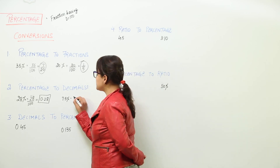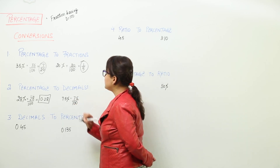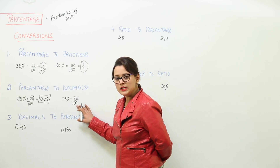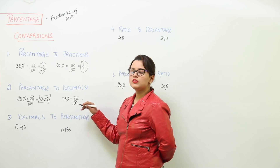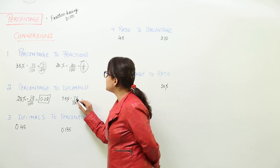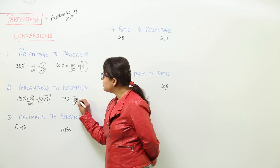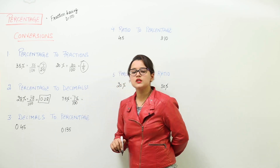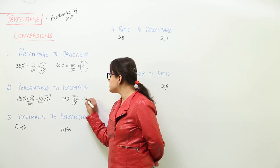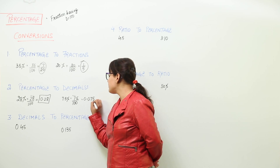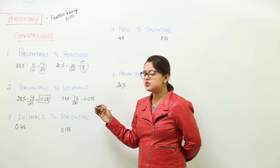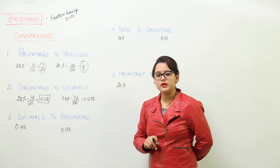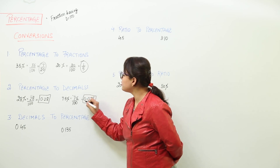Similarly for the next one: get rid of the percentage sign and write 7.5 over 100. This is a decimal fraction because the denominator is a power of 10. We count the number of zeros and start from the rightmost part of the numerator. But here the numerator is already a decimal, so we start counting from the decimal place — the digit before the decimal is 7. We take two decimal places because there are two zeros, giving us 0.075. That is the decimal for 7.5 percent.